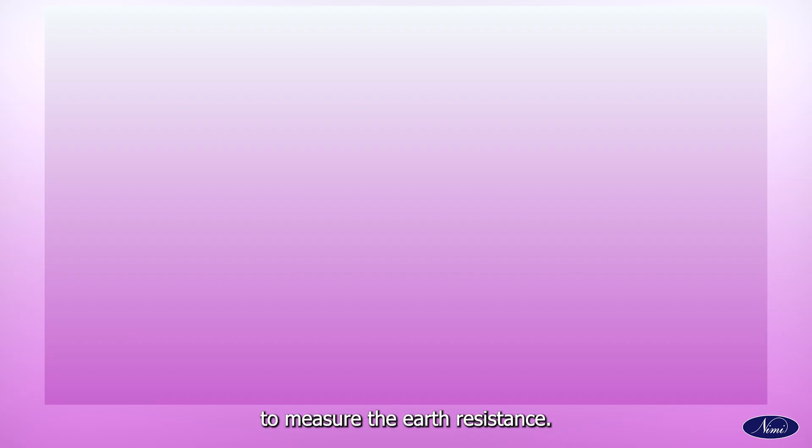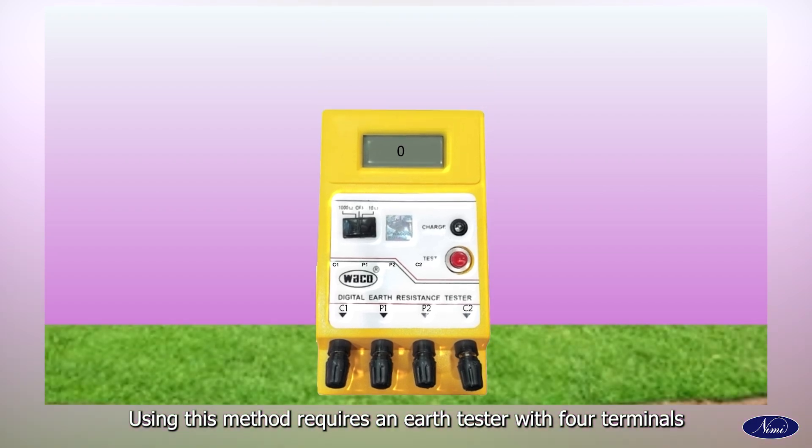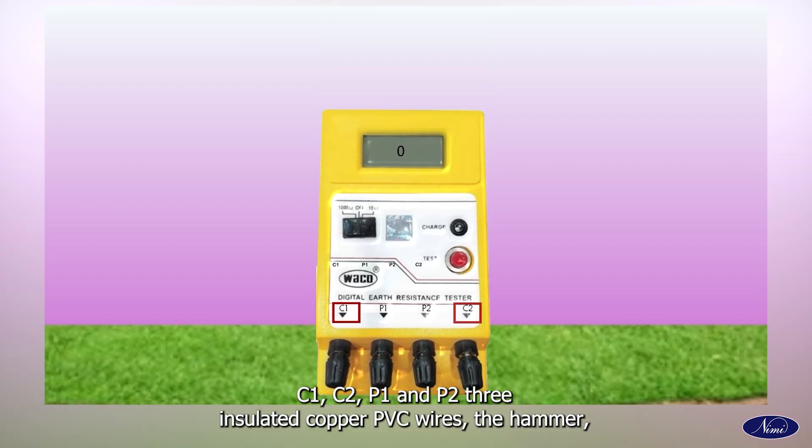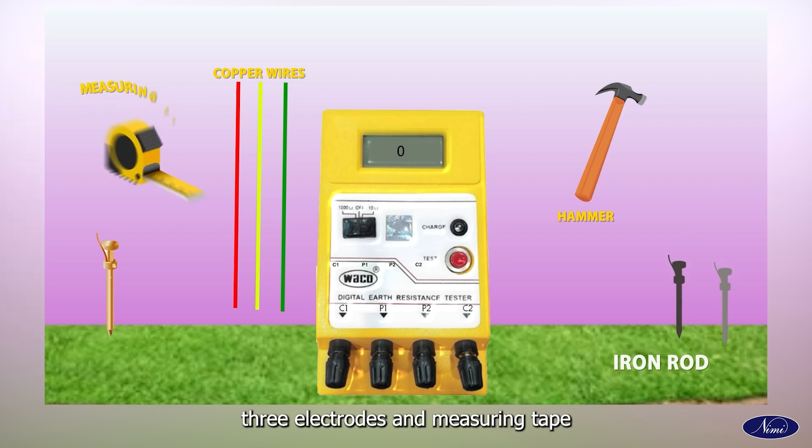To measure the earth resistance using this method requires an earth tester with four terminals: C1, C2, P1 and P2, three insulated copper PVC wires, a hammer, three electrodes and measuring tape.